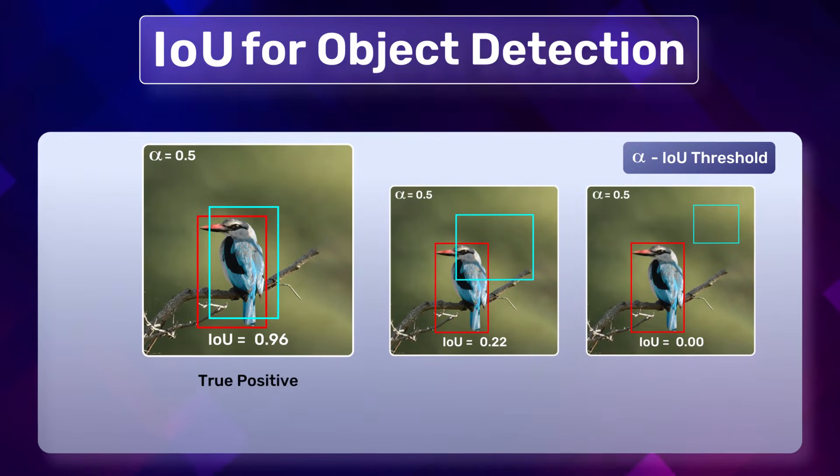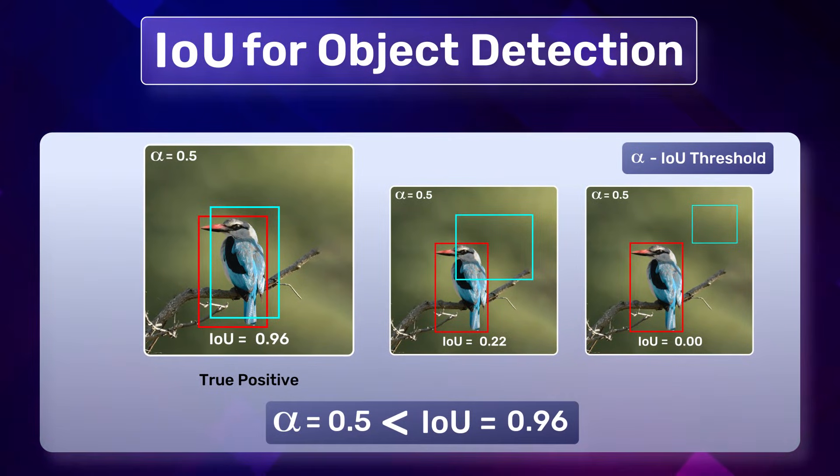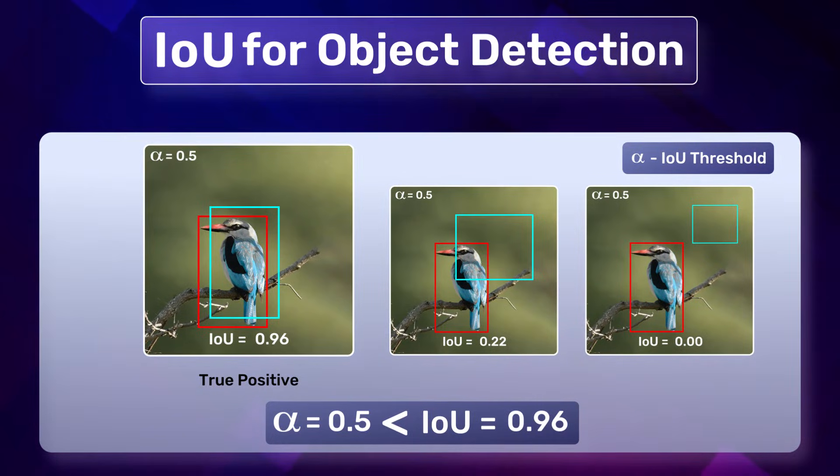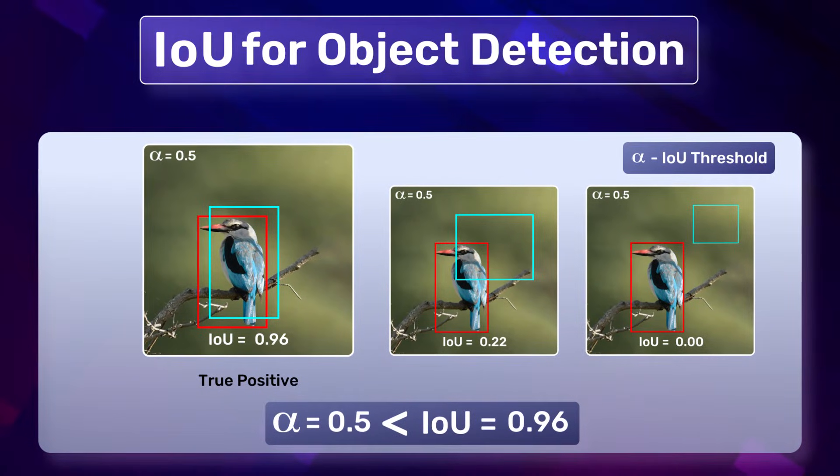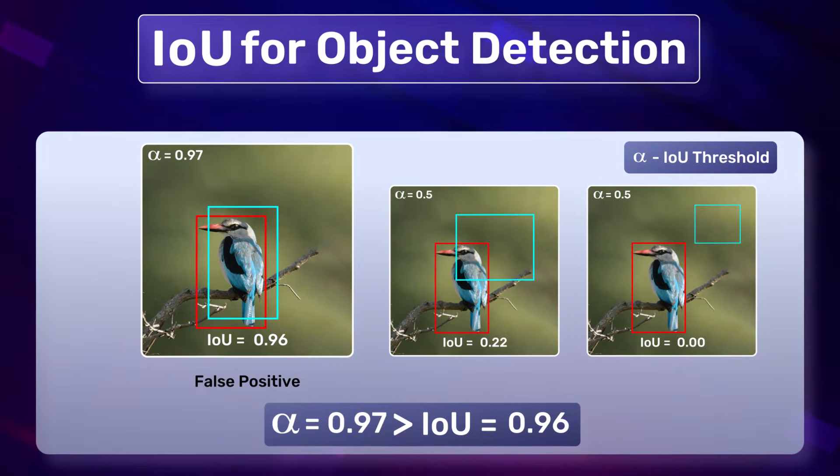The first prediction is a true positive because IoU, which is 0.96, is greater than the IoU threshold, which is 0.5. If we set the threshold at 0.97, it becomes a false positive.